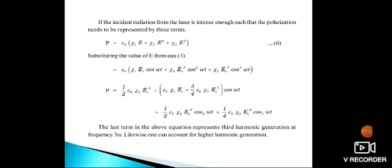So P = ε₀ψ₂E₀²/2 + ε₀(ψ₁E₀ + 3ψ₃E₀³/4) cos ωt + ... We are rearranging the above equation into four terms. The last term in the above equation represents third harmonic generation at frequency 3ω. Likewise, one can account for higher harmonic generation.